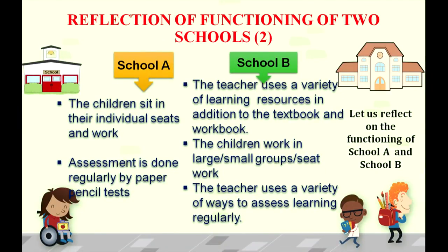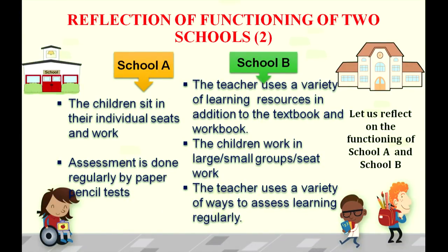In School B, children work in large, small, and very large groups. In School A, the teacher does assessment simply by paper-pencil tests. While in School B, the teacher uses a variety of assessment practices — not only written ones. Children learn through various ways of assessment including experimentation and group learning, where she assesses how children are doing activities in a group situation. The reflection of School A is very different from School B.